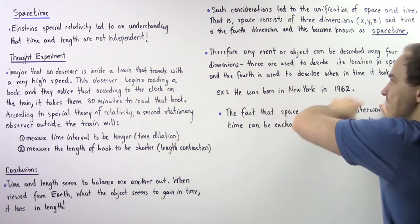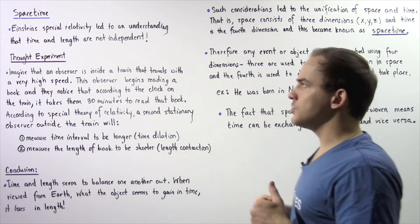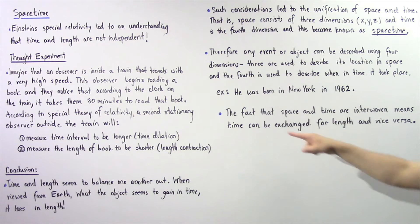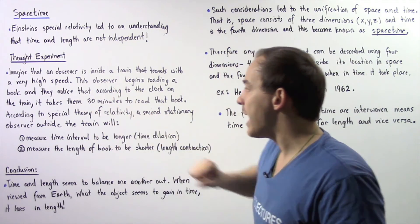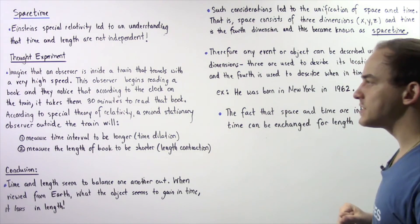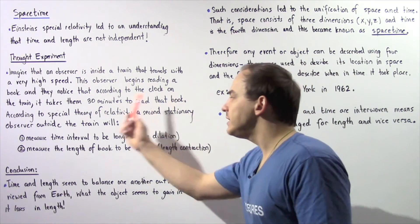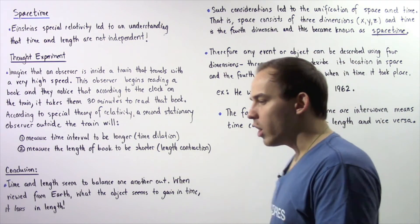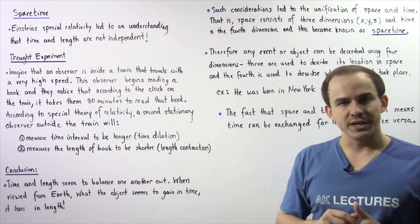This is the easy part in understanding the relationship between space and time. The difficult part is the following: the fact that space and time are interwoven means that time can be exchanged for length and vice versa, which is exactly what we saw happen in this thought experiment. What the book essentially gained in time, it lost in length. One increased and the other decreased.